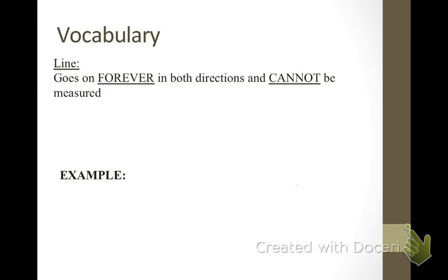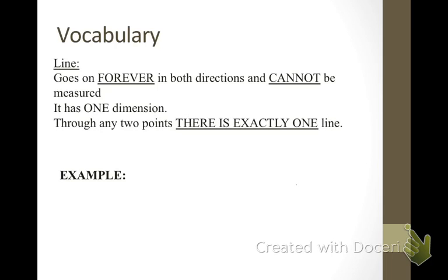The second thing that we're going to look at is a line. A line is actually a collection of points. It goes on forever in both directions, and since it goes on forever and ever, it cannot be measured, and it is a straight line. It has one dimension, but it cannot be measured, and through any two points, there is exactly one line.